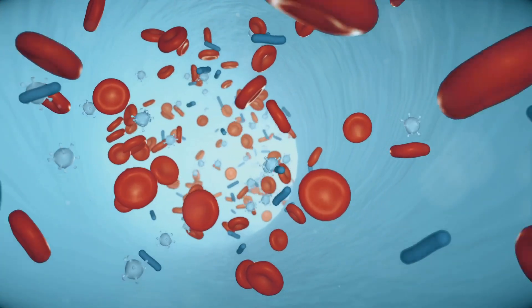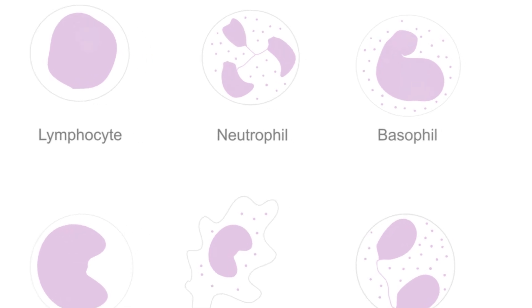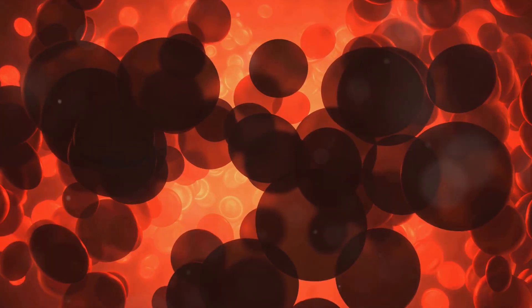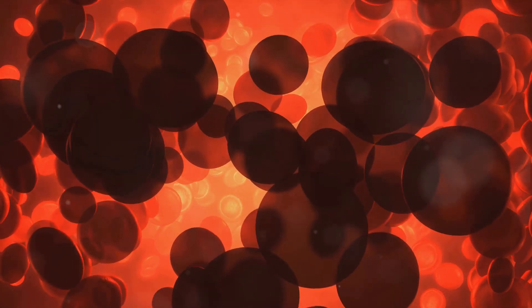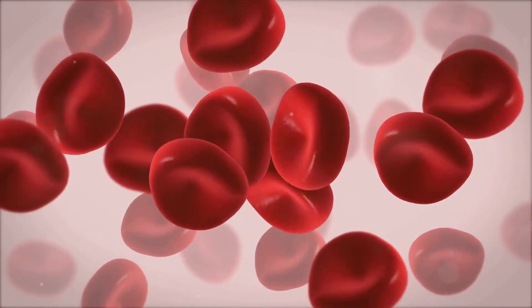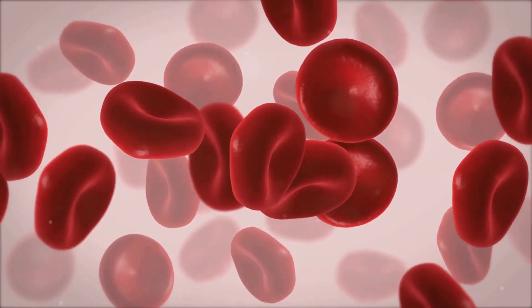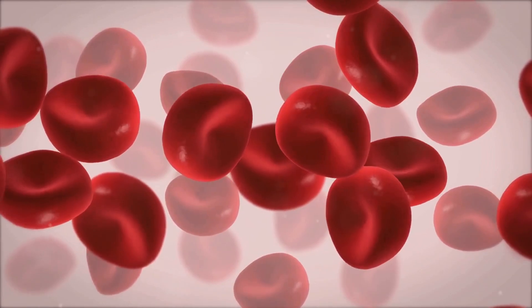These microscopic warriors are always on high alert, ready to spring into action at the first sign of trouble. There are various types of white blood cells, each with their own unique abilities and roles. Some are like scouts, constantly patrolling for danger. Others are soldiers, rushing to the frontline when an infection invades. And then there are those that act like the cleanup crew, helping to restore order after a battle.